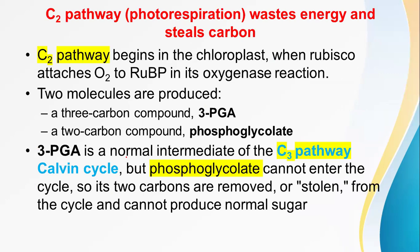The C2 pathway wastes energy and steals carbon. The C2 pathway begins in the chloroplast when Rubisco attaches oxygen to ribulose bisphosphate and the oxygenase reaction starts. Two molecules are produced: number one, a 3-carbon compound — 3-phosphoglyceric acid — and the second molecule produced during photorespiration is a 2-carbon compound known as phosphoglycolate. The 3-phosphoglyceric acid is a normal intermediate of the C3 Calvin cycle pathway, but phosphoglycolate cannot enter the cycle.